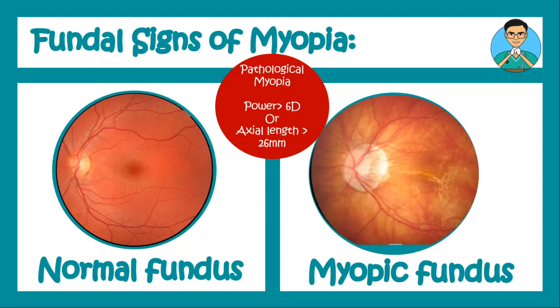Another very important aspect of myopia includes the fundal signs of myopia. These fundal signs are only seen in case of pathological myopia, which is defined as when the myopia power is more than six diopters or the axial length of the eyeball is more than 26 mm. In non-pathological myopia, fundal signs are very rare.